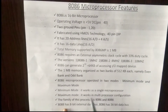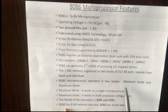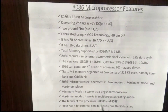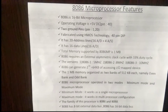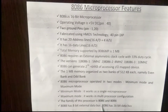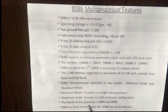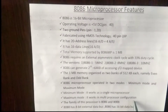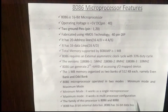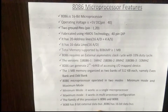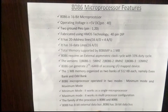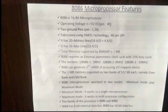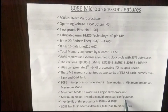The 8086 microprocessor operates in two modes: minimum mode and maximum mode. In minimum mode, there is a single 8086 microprocessor. In maximum mode, there is a multi-processor configuration where one 8086 acts as a master and the remaining coprocessors act as slaves.